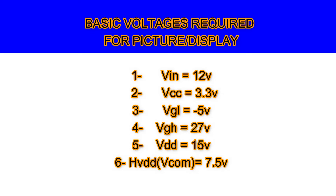The fifth voltage is VDD or VAA — this is equal to 15V. The sixth voltage required for picture or display is HVDD or VCOM — it is almost half of VDD, so it should be 7V or 7.5V.